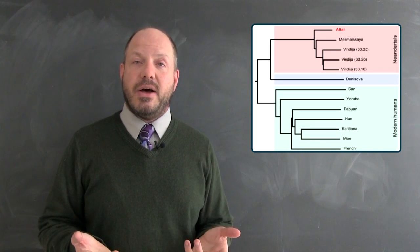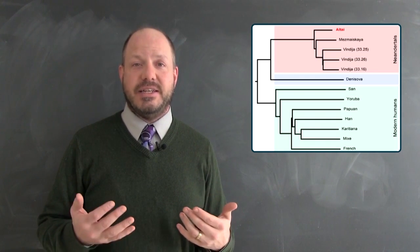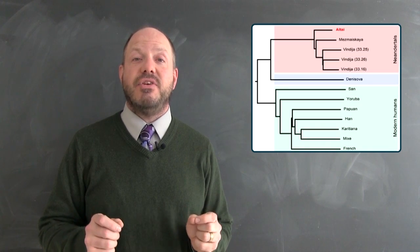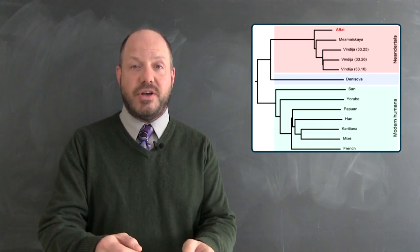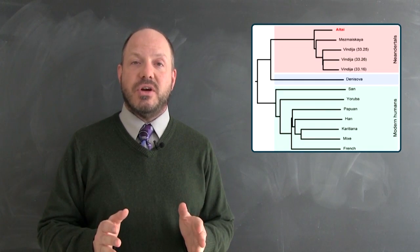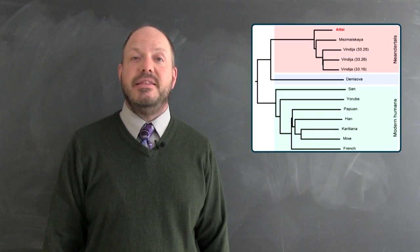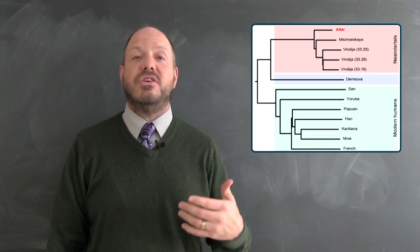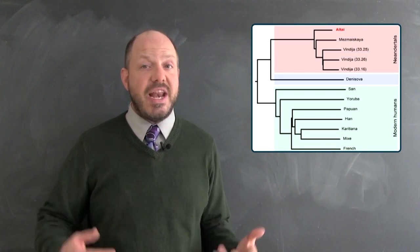So how can we tell that a Neanderthal is ancestral to somebody living today? The way that we do this is by comparing different humans with each other and with Neanderthals. When we observe that some humans are more like Neanderthals than others, the explanation for that is that those humans have Neanderthals in their ancestry.